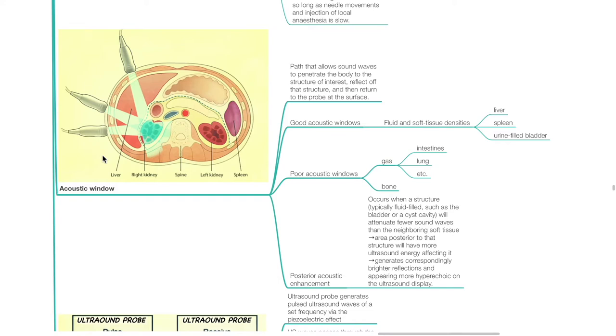Acoustic window refers to the path that allows sound waves to penetrate the body to reach the structure of interest, reflect off that structure, and return to the probe at the surface. Examples of good acoustic windows include fluid and soft tissue densities such as liver, spleen, and urine-filled bladder. Examples of poor acoustic windows include gas-filled structures such as intestines and lungs, and bone. Posterior acoustic enhancement occurs when a fluid-filled structure such as the bladder or a cyst attenuates fewer sound waves than neighboring soft tissue, causing the area posterior to that structure to appear more hyperechoic on the ultrasound display.